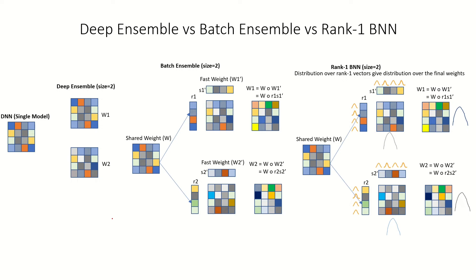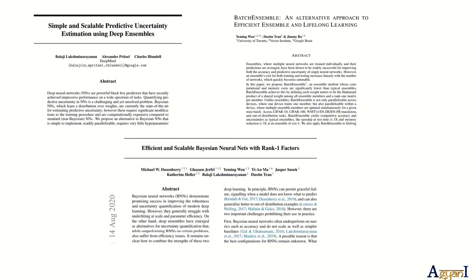Hello everyone, a very good day — I hope everyone is doing well and is safe. In this video we are going to see how the weight matrices are defined for different deep learning ensemble papers, which are used for uncertainty estimation. The three papers we will cover are the Deep Ensemble paper, the Batch Ensemble paper, and the Rank-1 BNN paper.